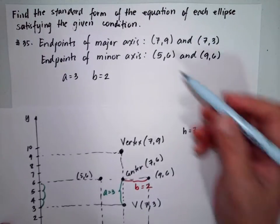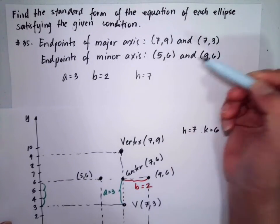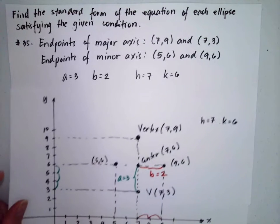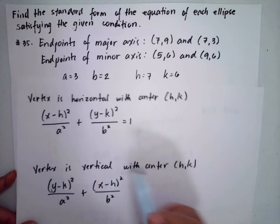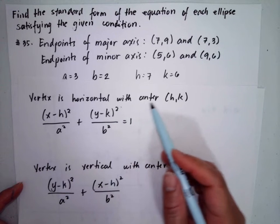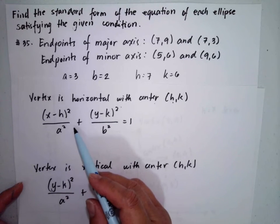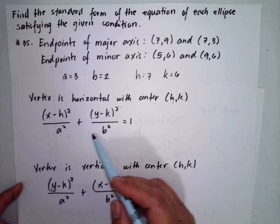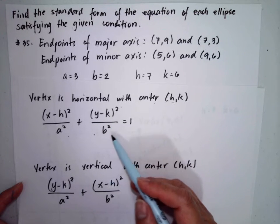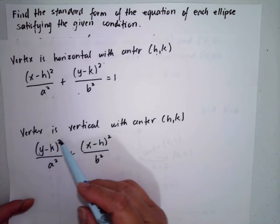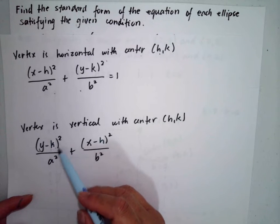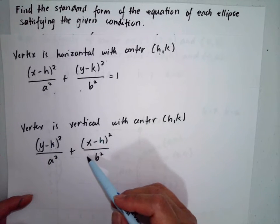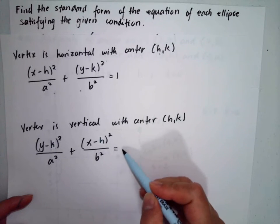Our h is equal to 7 and k is equal to 6. Since the center is not at the origin (0, 0), we will use the shifted formula. For a horizontal vertex with center (h, k), the formula is (x − h)²/a² + (y − k)²/b² = 1. For a vertical vertex, the formula is (y − k)²/a² + (x − h)²/b² = 1.